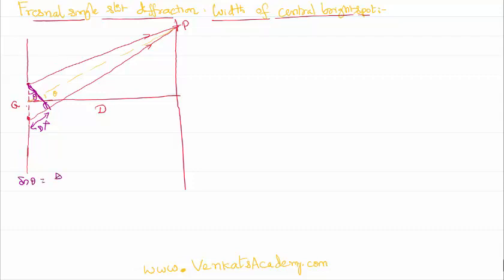Sin theta equals delta x by a, like we have written earlier even in the case of the interference experiment also. So delta x could be written like a sin theta. When theta is small, sin theta is close to theta.